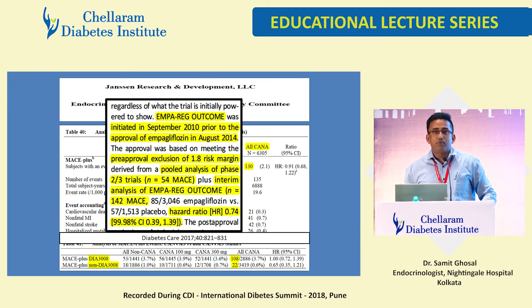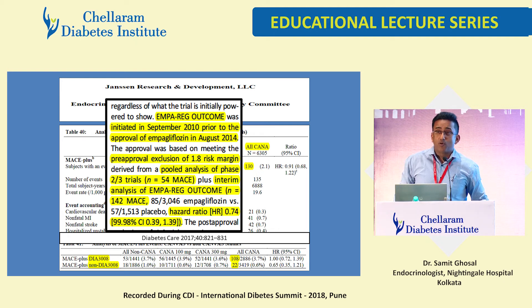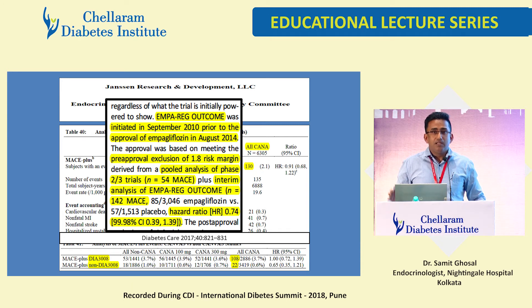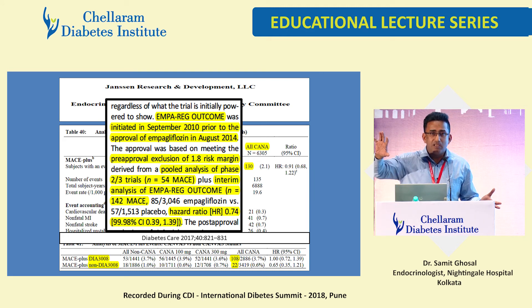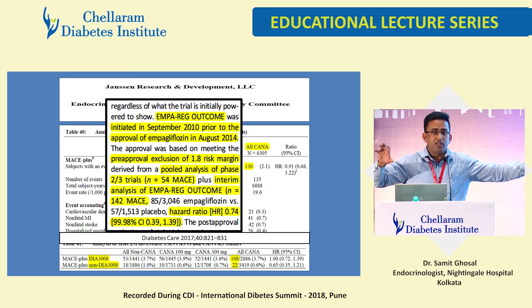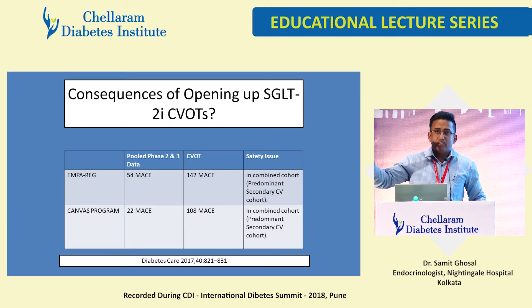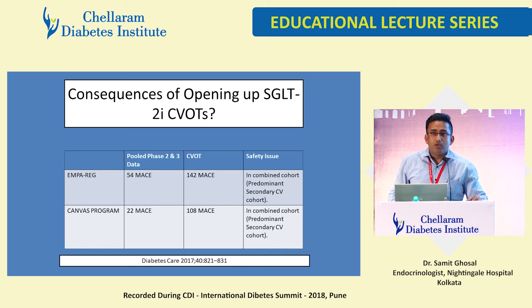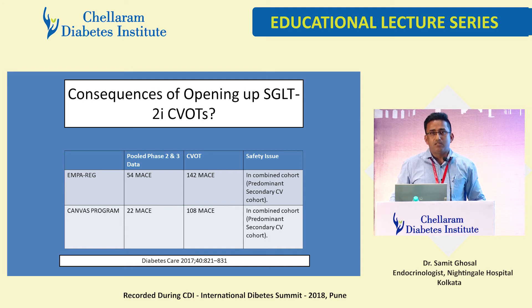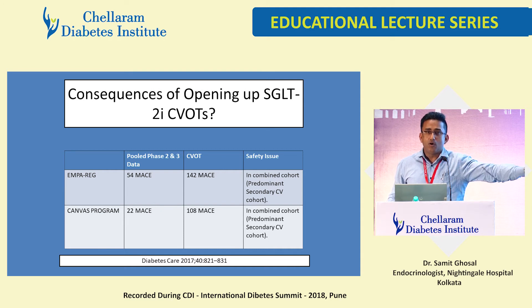The same thing happened in the EMPA-REG outcome trial. They had only 54 MACE events in the pooled Phase 2/Phase 3 data, so they had to open EMPA-REG at one year. Remember: 99% of EMPA-REG patients had established cardiovascular disease — that's secondary prevention. Those 54 events were predominantly from a primary prevention population. You pool them together and say the drug is safe for the market. Again — polluted data. Safety in which population? This cannot answer whether the drug is safe in those without cardiovascular disease, and neither CANVAS nor EMPA-REG nor the pooled analysis can answer that question.